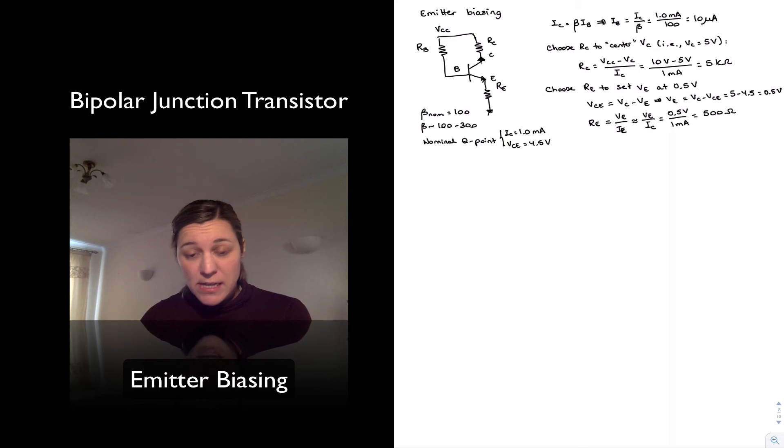So I have my RC, I have my RE. The last thing I need to find is RB, the value of RB, to set my base current to 10 microamps.